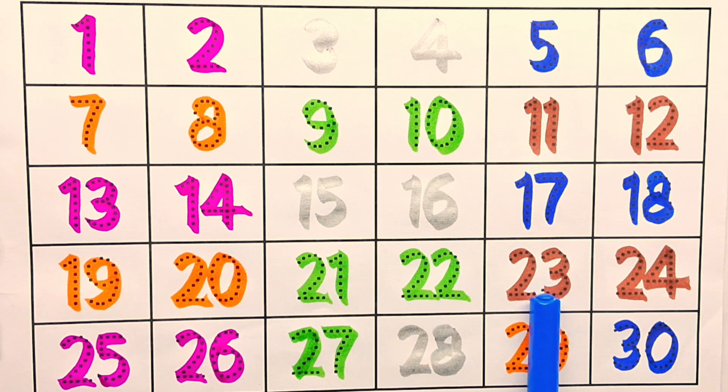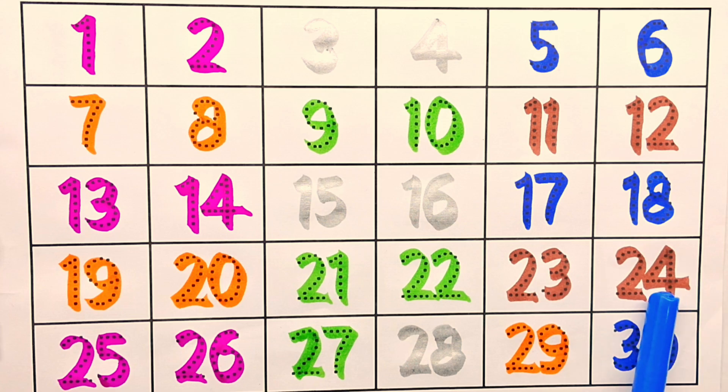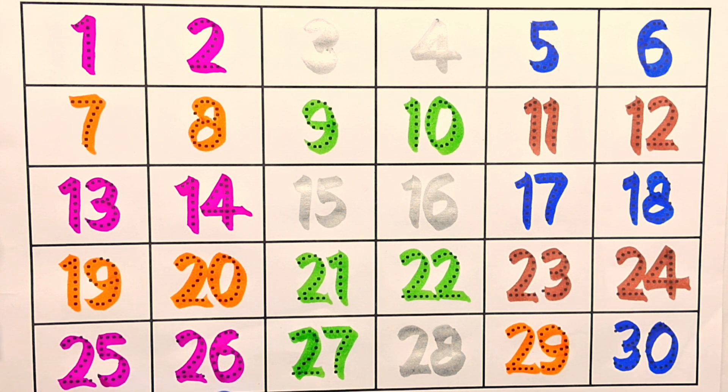Twenty-three, twenty-four, twenty-five, twenty-six, twenty-seven, twenty-seven, twenty-eight, twenty-eight, twenty-nine, twenty-nine, thirty, thirty.